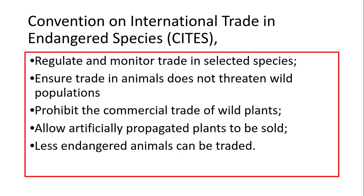CITES — the Convention on International Trade in Endangered Species — regulates and monitors the trade in selected species. They ensure that trading animals does not threaten wild populations, prohibit the commercial trade of wild plants, and allow artificially propagated plants to be sold. Less endangered animals can be traded but the more endangered ones cannot. For example, going through airports or crossing borders, your luggage can be checked for endangered species products such as crocodile skin items, snake skins, or furs.